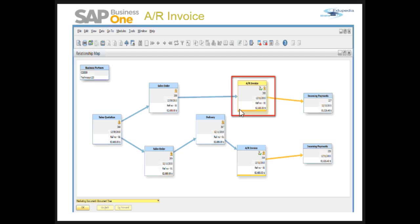If you see a red bar at the bottom of an AR invoice, that means the AR invoice has not been paid.